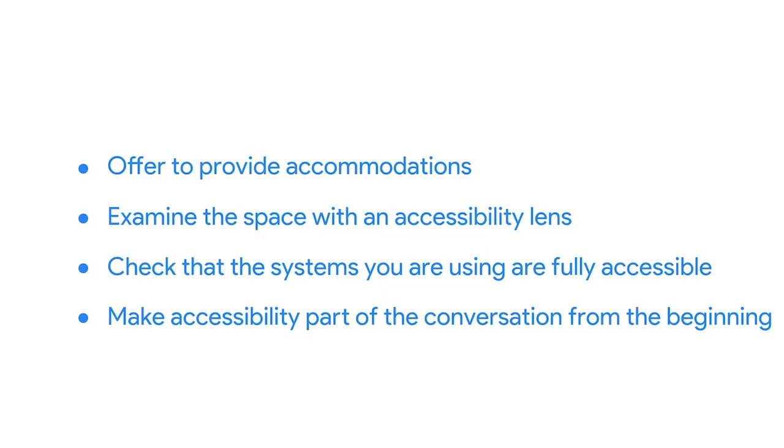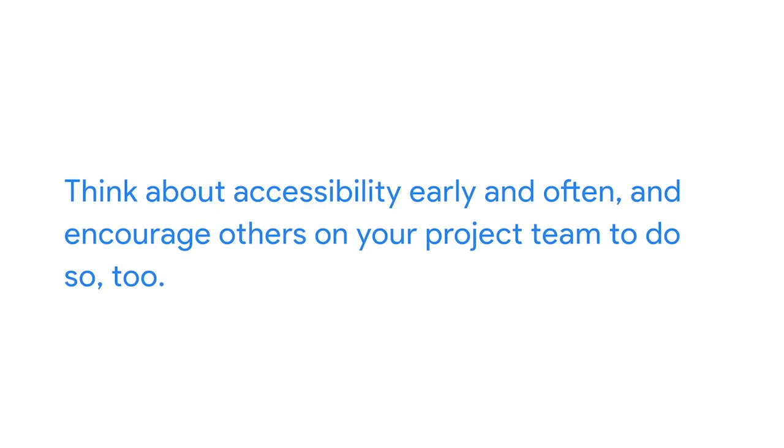Beyond collecting feedback, as a project manager it's important to make accessibility part of the conversation from the beginning, especially if your project pertains to a process or product. Oftentimes, incorporating accessible features into a product is overlooked or left to the final stages, and can lead to serious implications like launch delays or a product that can't be used by a percentage of the population. Ensure your developers are familiar with accessibility requirements at the start — help connect them with appropriate resources or experts, include testers with various disabilities in your usability testing whenever possible, and at the very least have the product tested for adherence to accessibility guidelines. Think about accessibility early and often, and encourage others on your project team to do so too.